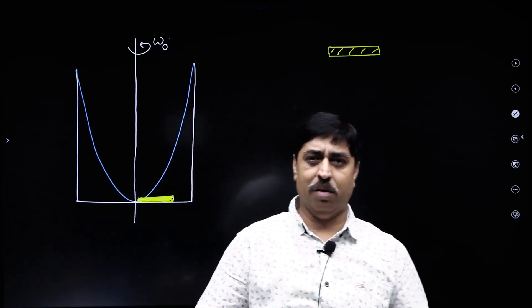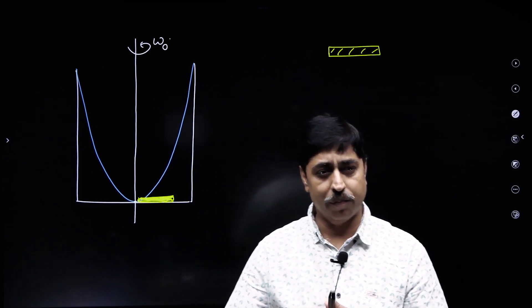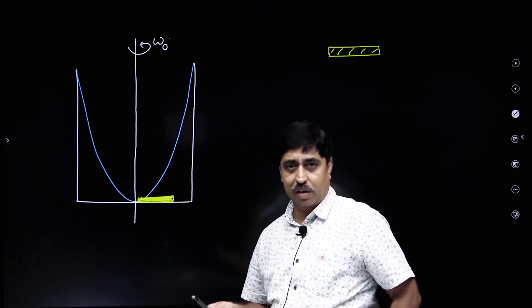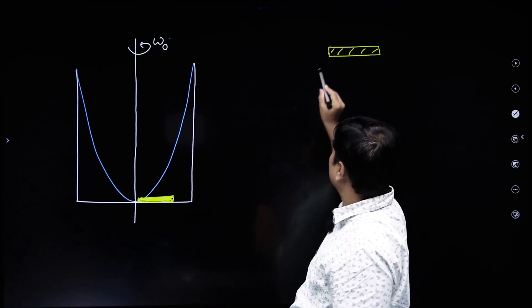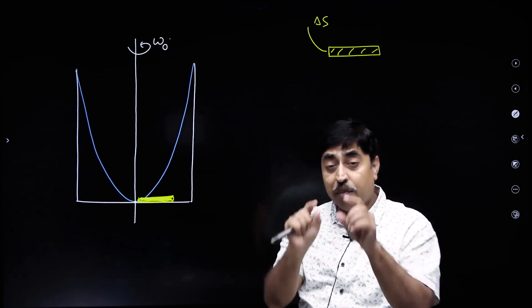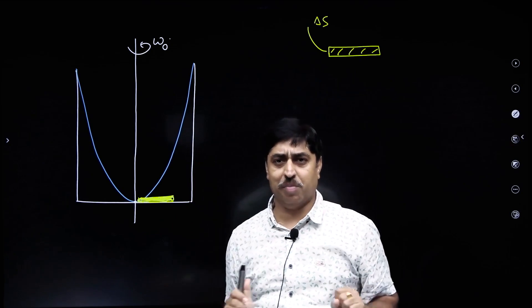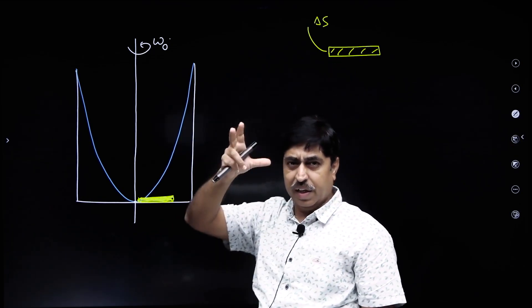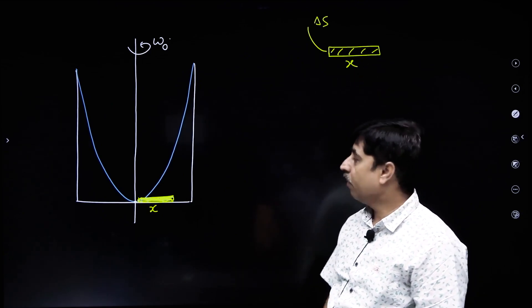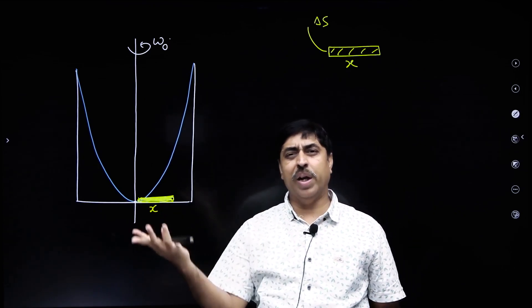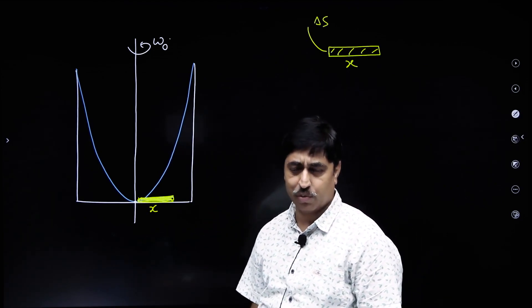You all know that if any object rotates, there must be some radial force acting on it; otherwise rotation is just not possible. So, who is providing the radial force to this yellow colored liquid element so that it can rotate? Let us assume that the area of cross section of this cylinder is delta s. I am considering a cylindrical liquid element and delta s is its area of cross section; its length is x.